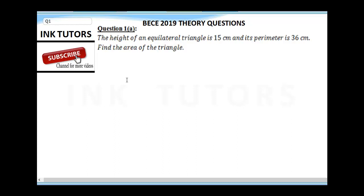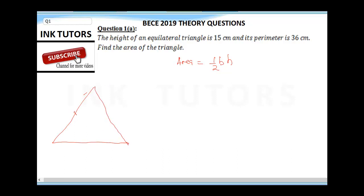Our first question says: the height of an equilateral triangle is 15 cm and its perimeter is 36 cm — find the area of the triangle. The first thing you need to do is recall that the area of a triangle is half base times height. Let's draw a triangle. Remember, an equilateral triangle has three equal sides.